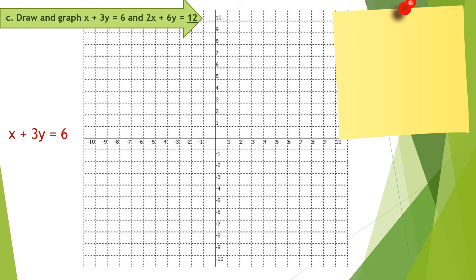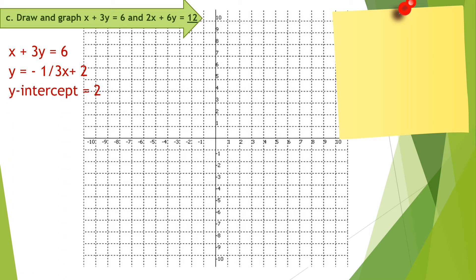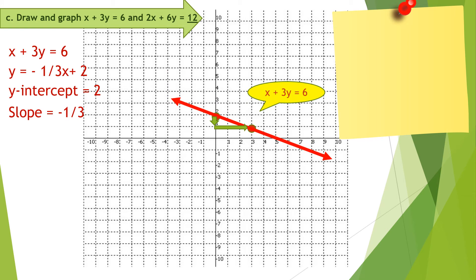In letter C, the first equation is x plus 3y equals 6. Let us first write it in slope-intercept form. The y-intercept is positive 2, so let us plot positive 2. The slope is negative one-third, so the change in y is negative 1 and the change in x is positive 3. We get the graph of x plus 3y equals 6. Let us take note of the slope and y-intercept.